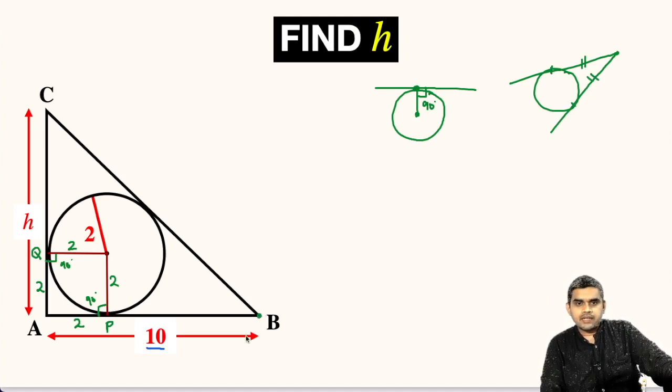Here, B is that external point. Let us name this point as R. BR and BP will be the tangents to this circle, so the length must be equal according to this theorem. If AP is 2 units, then the measure of PB will equal 10 minus 2, that is 8 units.